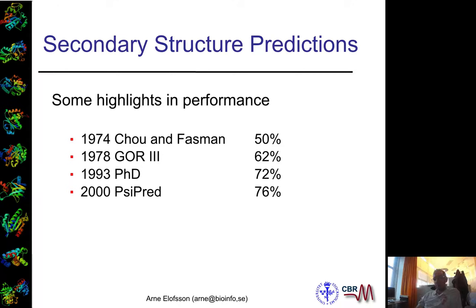In the 80s or late 70s, maybe 60%, 65% at best. Then there was quite a big breakthrough in the early 90s, particularly with the method PhD. It obtained over 70%, and now it has been improved to 76%, probably getting close to 80% nowadays.